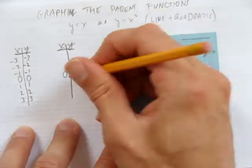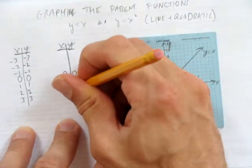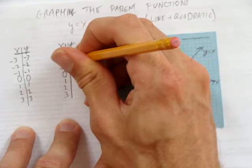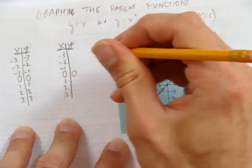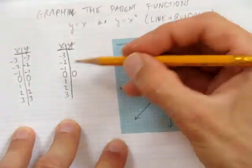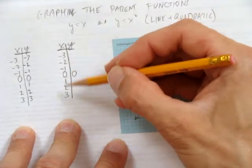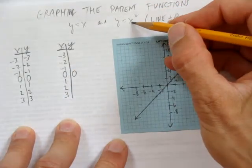So, again, we'll pick easy x's. We can pick anything we want. But let's pick small integers on either side of the vertex. And now to make this table, to get the y values, we picked our small x's on either side of the vertex. Now we just square them.